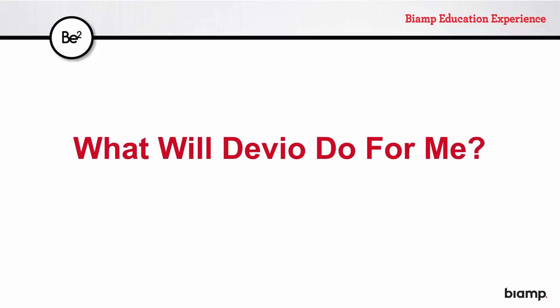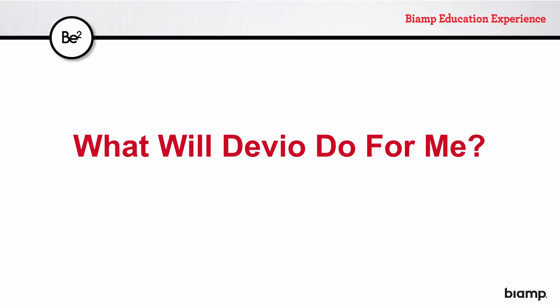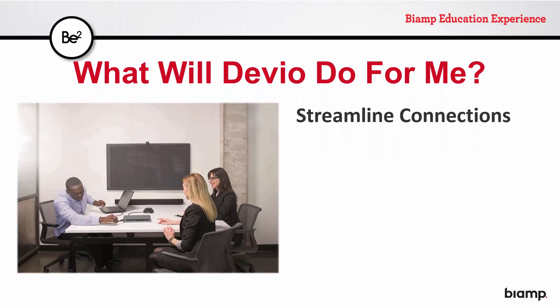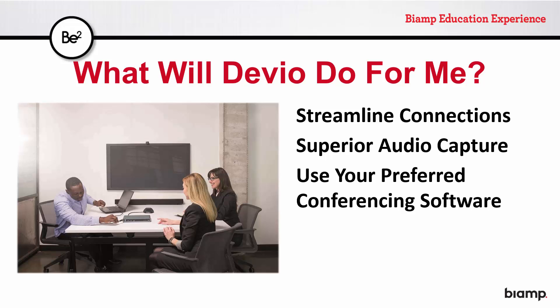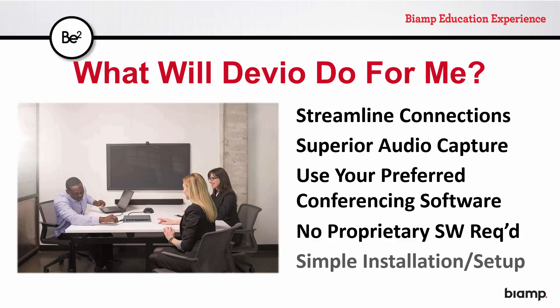Devio is not a conferencing unit in and of itself. Instead, its purpose is to facilitate and improve end-user experiences in meeting spaces by streamlining physical connections required between your PC and the audio-visual technology in the room, providing an 8-element beam-forming microphone, allowing the use of the conferencing program of your choice, and eliminating the need to install specialized proprietary software.